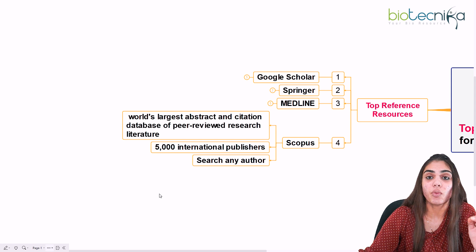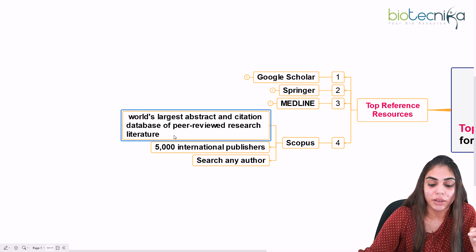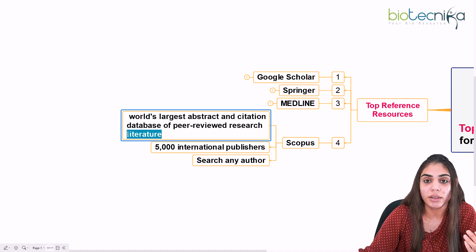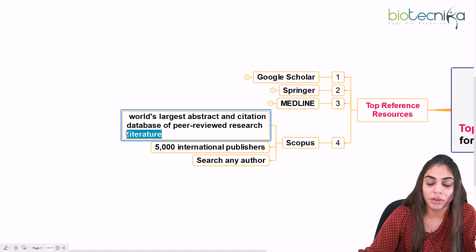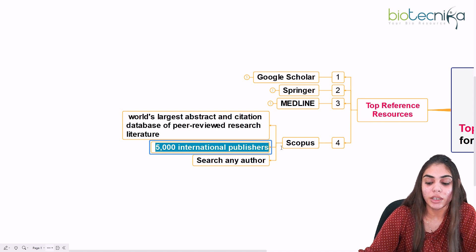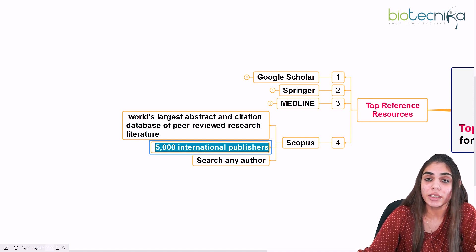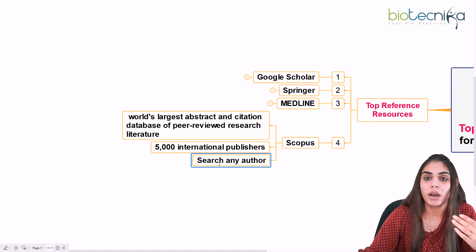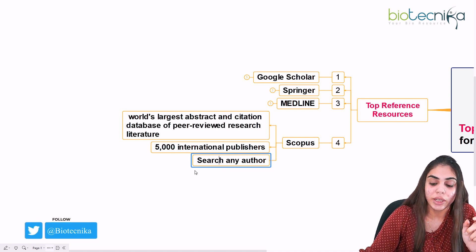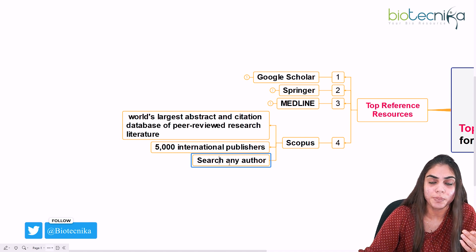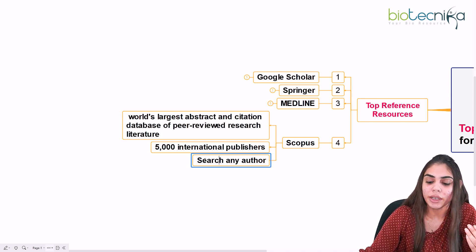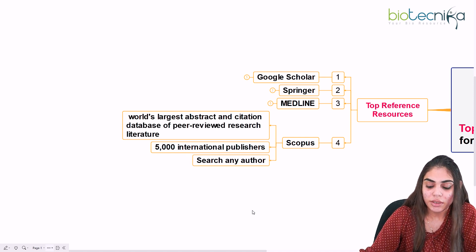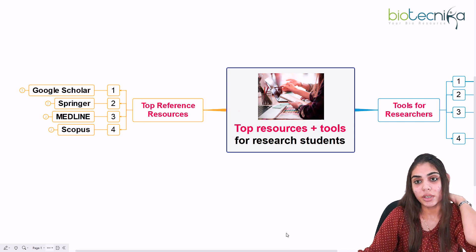The fourth reference resource is Scopus — the world's largest abstract and citation database of peer-reviewed research literature. If you are searching for peer-reviewed research or review publications, you will find abstracts and references there. It has 5,000 international publishers, giving you access to high-quality data and references. You can also search for specific authors or institutions — for example, a particular scientist's lab in the USA — and find all publications from that lab.